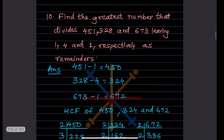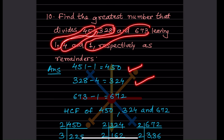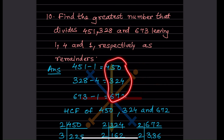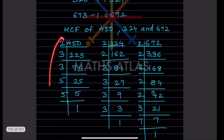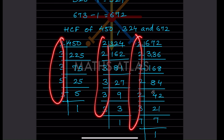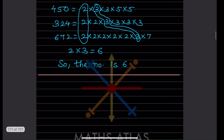Problem: find the greatest number that divides given numbers leaving remainders 1, 4, and 1 respectively. Subtract the remainders from the respective numbers: you get 450, 324, and 672. Find the HCF of these three numbers using prime factorization. After finding all prime factors, the common ones are 2 and 3, giving HCF = 6. So the greatest number is 6.